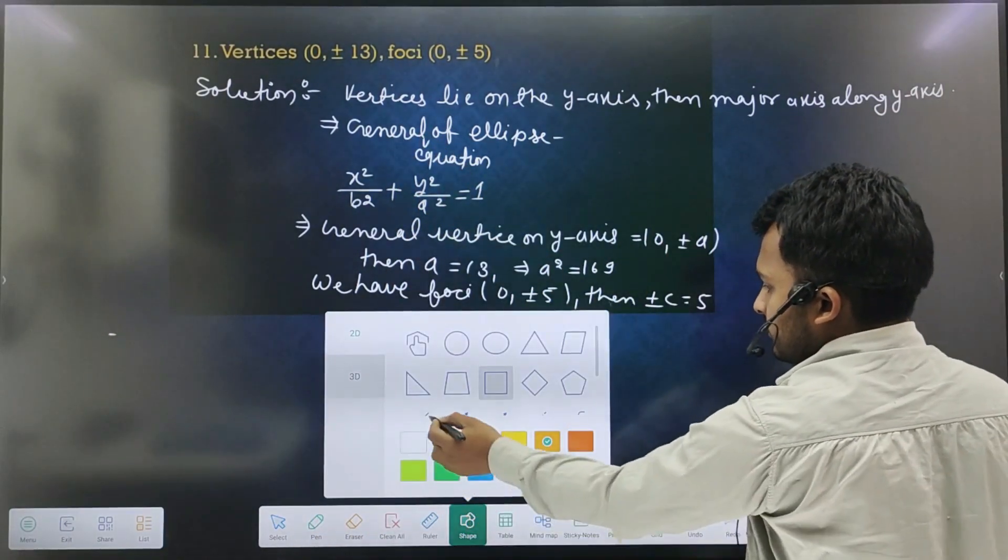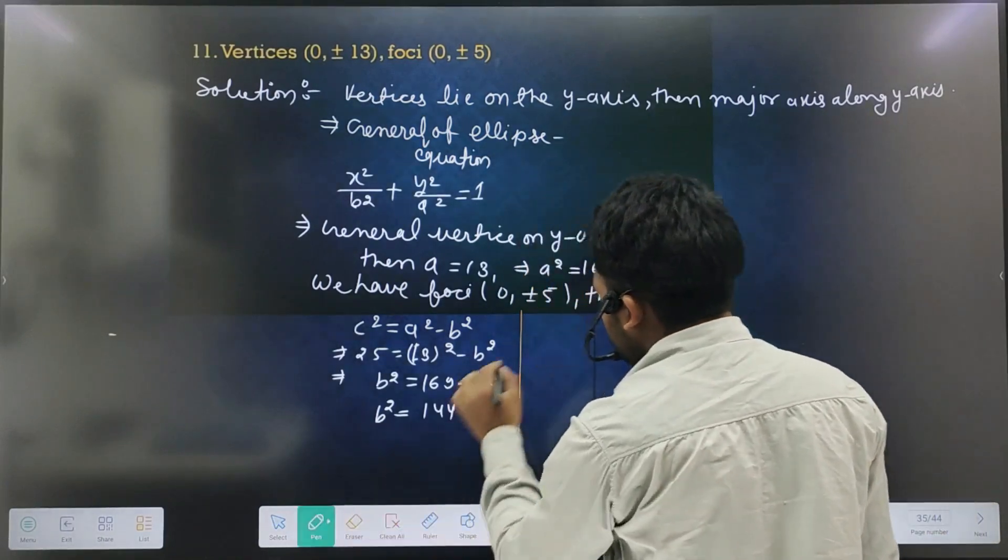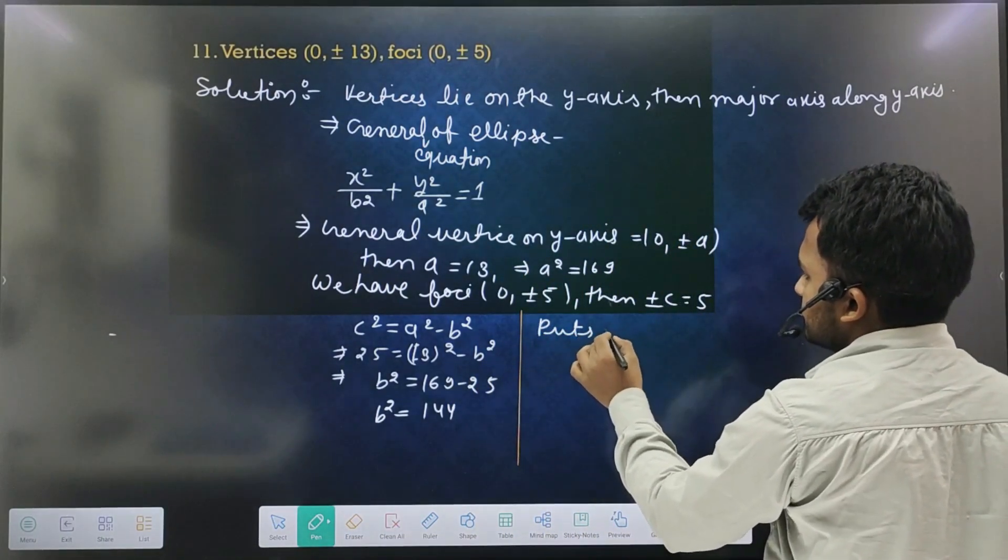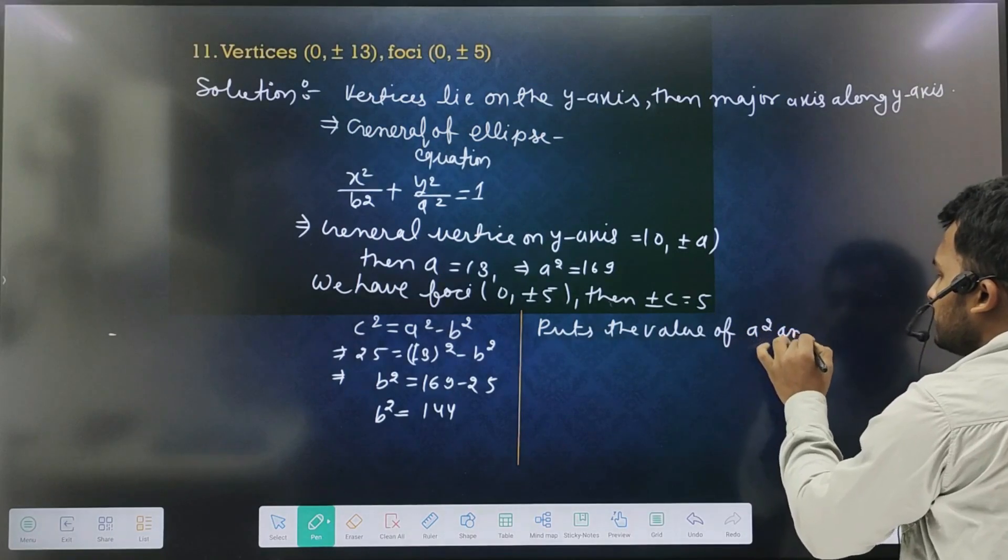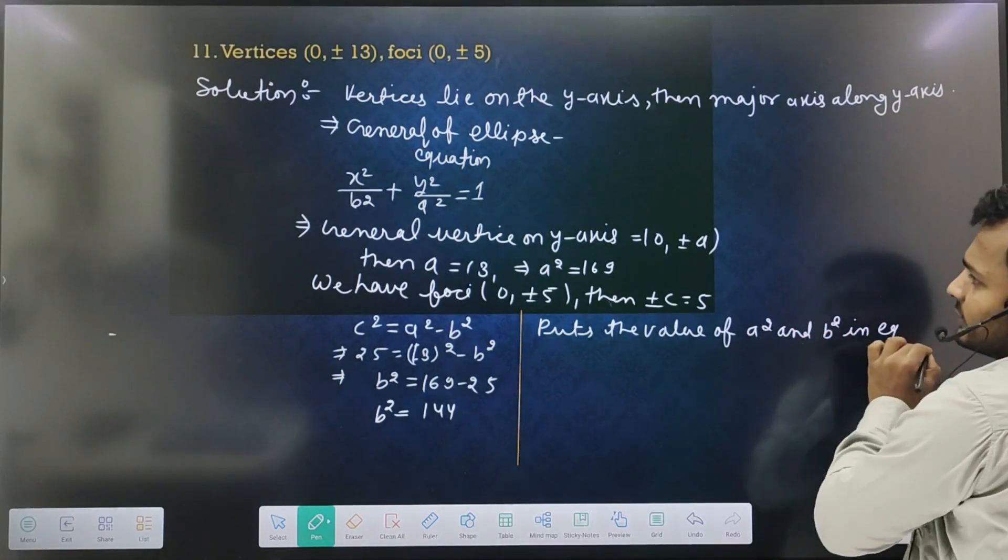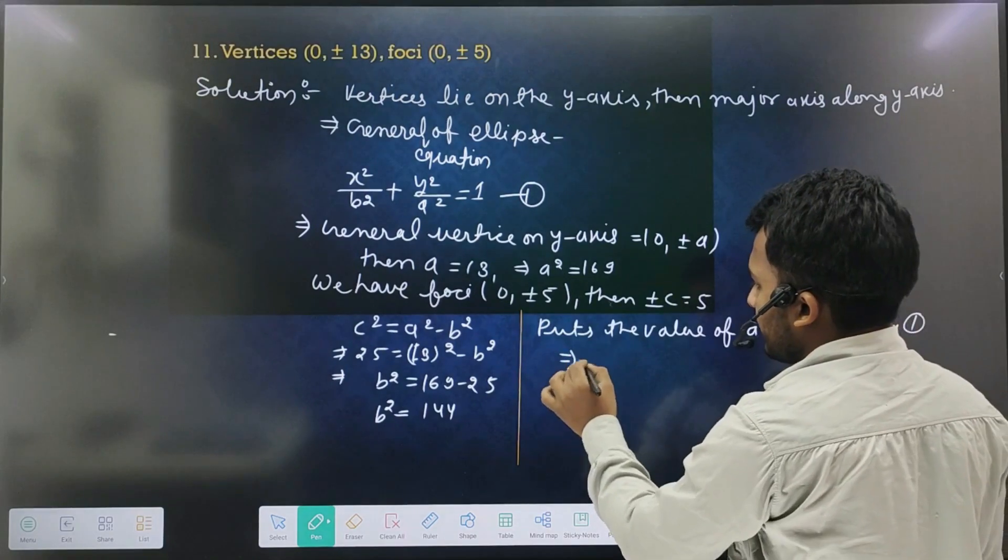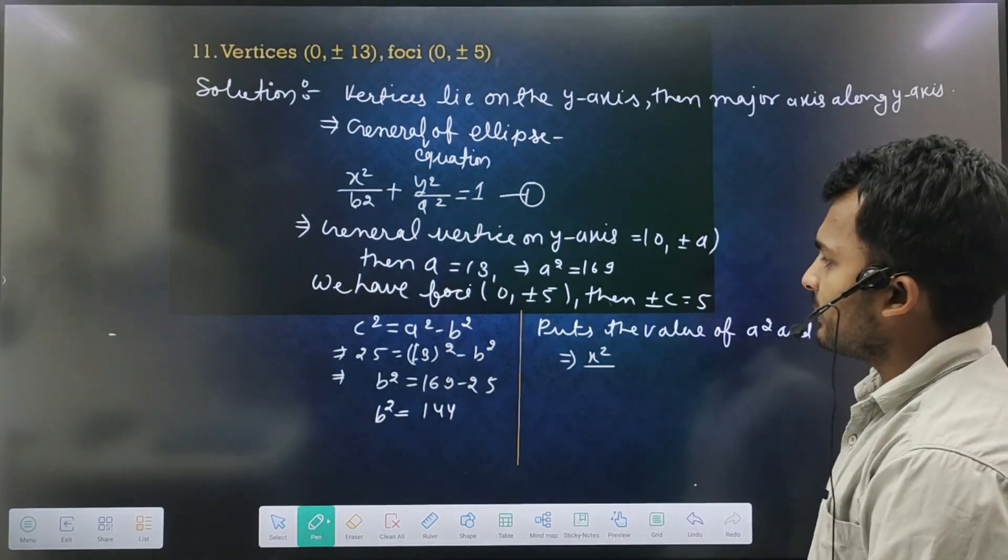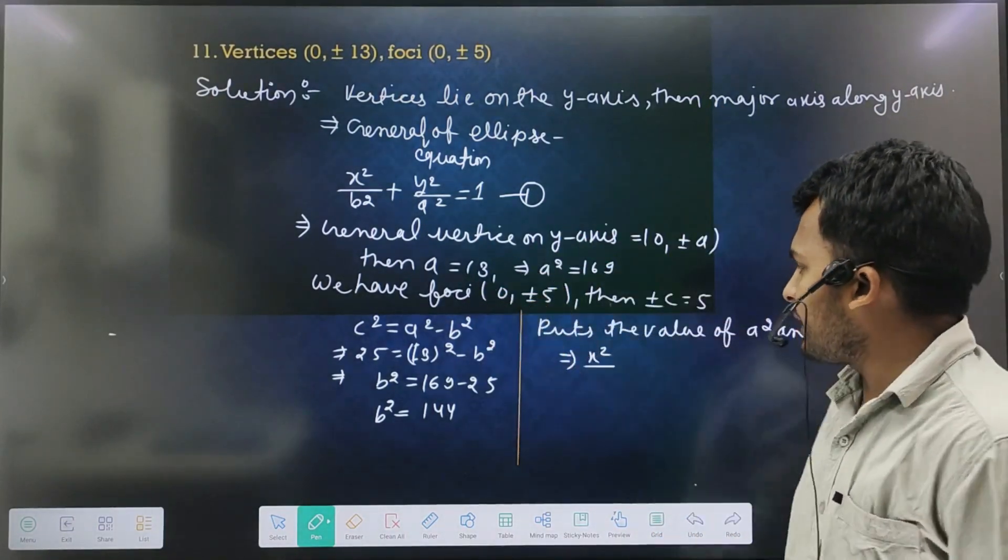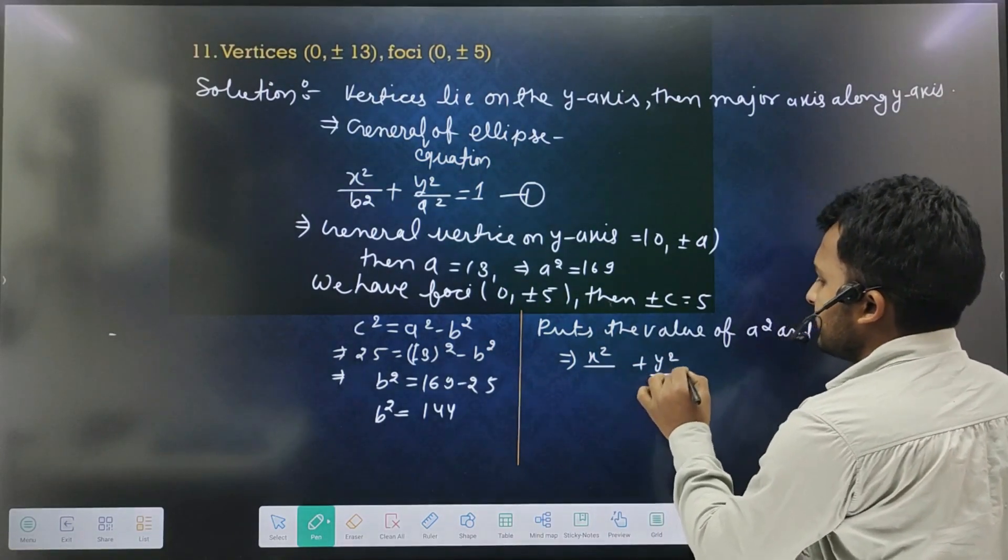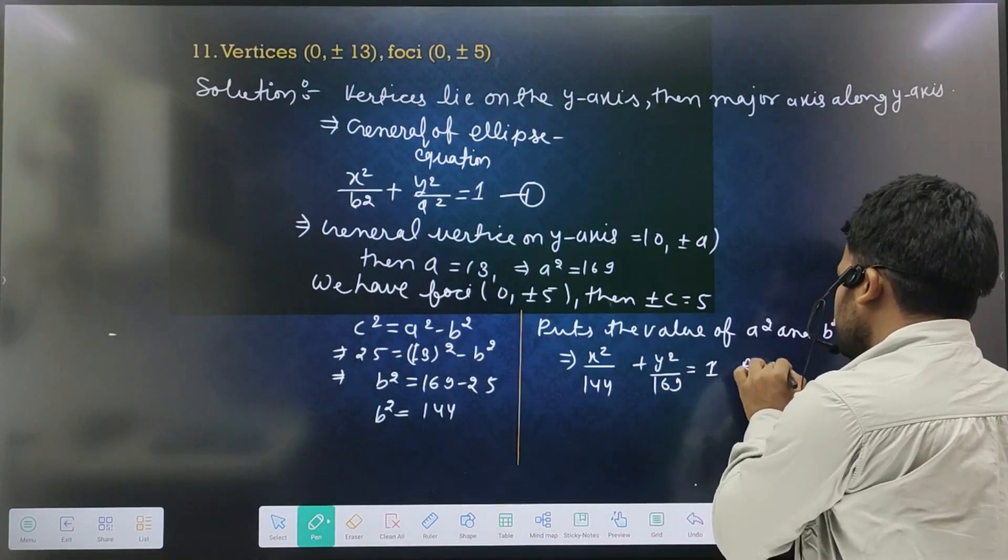So what will we do here? Write it here. Put the value of a square and b square in equation first. Give it equation first. Then x square... Wait, who is the government? y is making government. Then y square upon 169 and b square here 144 equal to 1, and this is the answer.